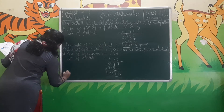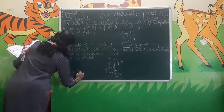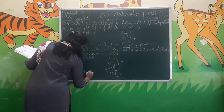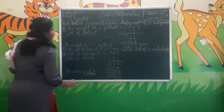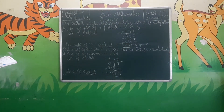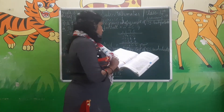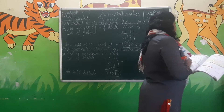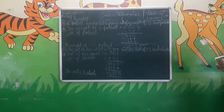Therefore, the cost of 55 shirts is Rs. 43,395. By doing this problem, we have completed Exercise 6 and also Chapter 4. Up to here we have completed Chapter 4.